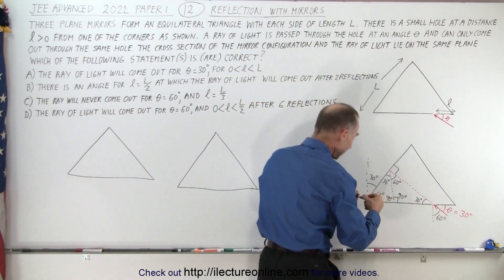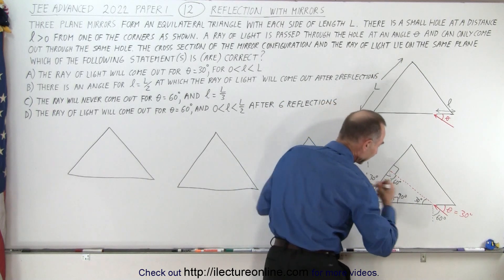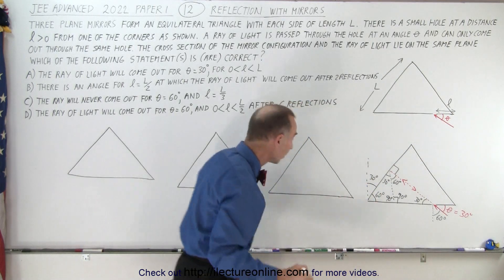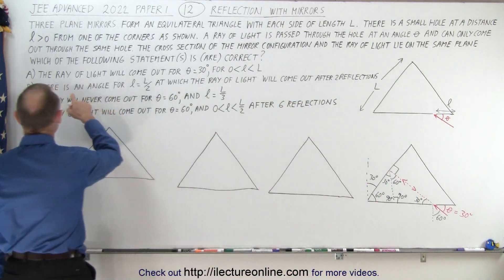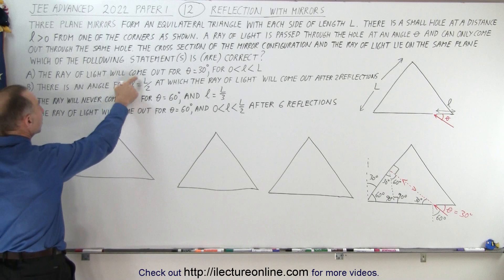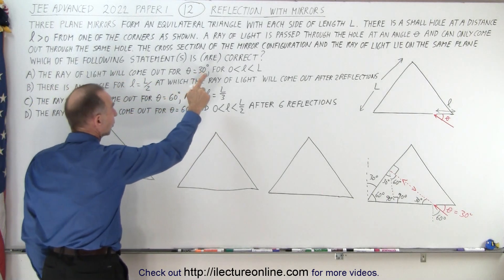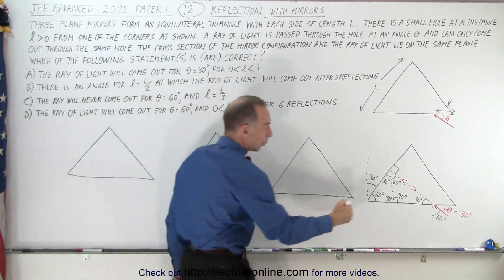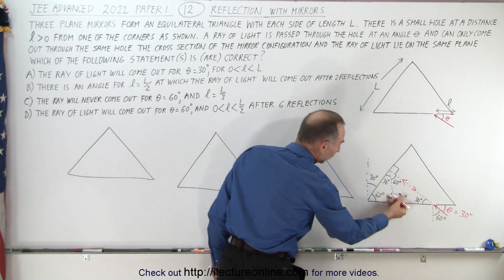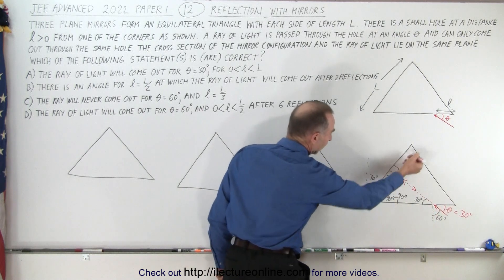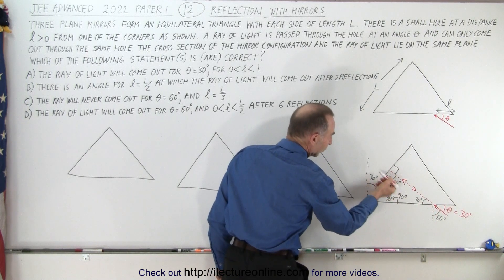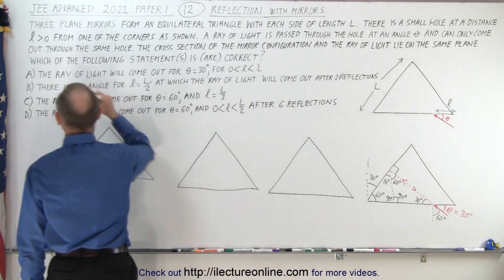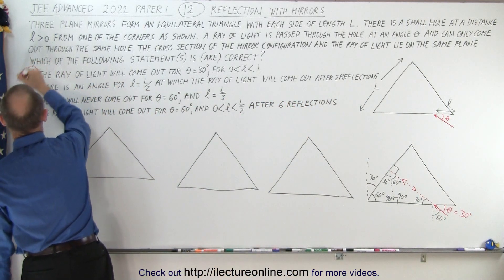That means the ray goes in, hits the mirror, and goes right back in the same direction, coming right back out of the hole after one reflection. So for answer A, the ray of light will come out for an angle of 30 degrees for the hole being anywhere between 0 and L. No matter where the hole is, the ray goes through at 30 degrees, hits the opposite mirror perpendicular to the surface, and comes right back out the same hole. Therefore, A is indeed a correct answer.